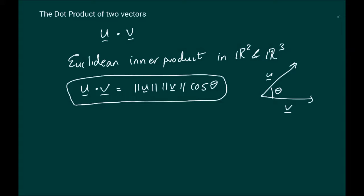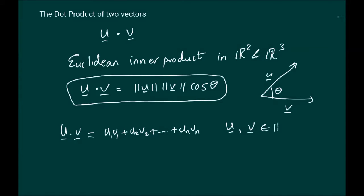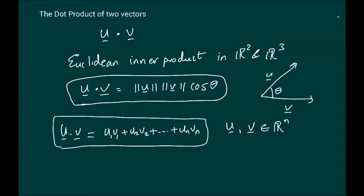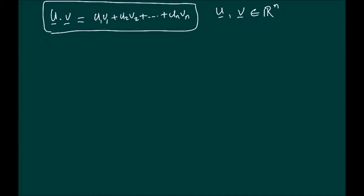We will define the dot product for Rn as follows. We define the inner product in an alternative way: it is the product of the respective individual components of u and v, where u and v both belong to Rn. This product, u dot v, holds for all vectors in Rn — it holds for R2, R3, R4, and above, up to Rn.